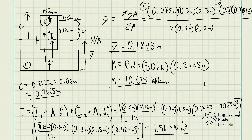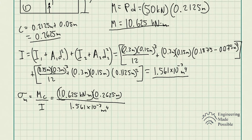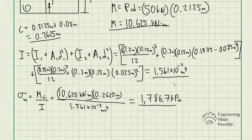Now we have all the necessary information. The bending stress equals the moment times c divided by the moment of inertia. Plugging in the moment, c, and moment of inertia, we get 1,786.7 kilopascals for the bending stress. One thing to ask yourself: is this going to be compressive stress or tensile stress? In this instance, since we're dealing with a load downward, it's going to be compressive stress for both the axial stress and the bending stress.